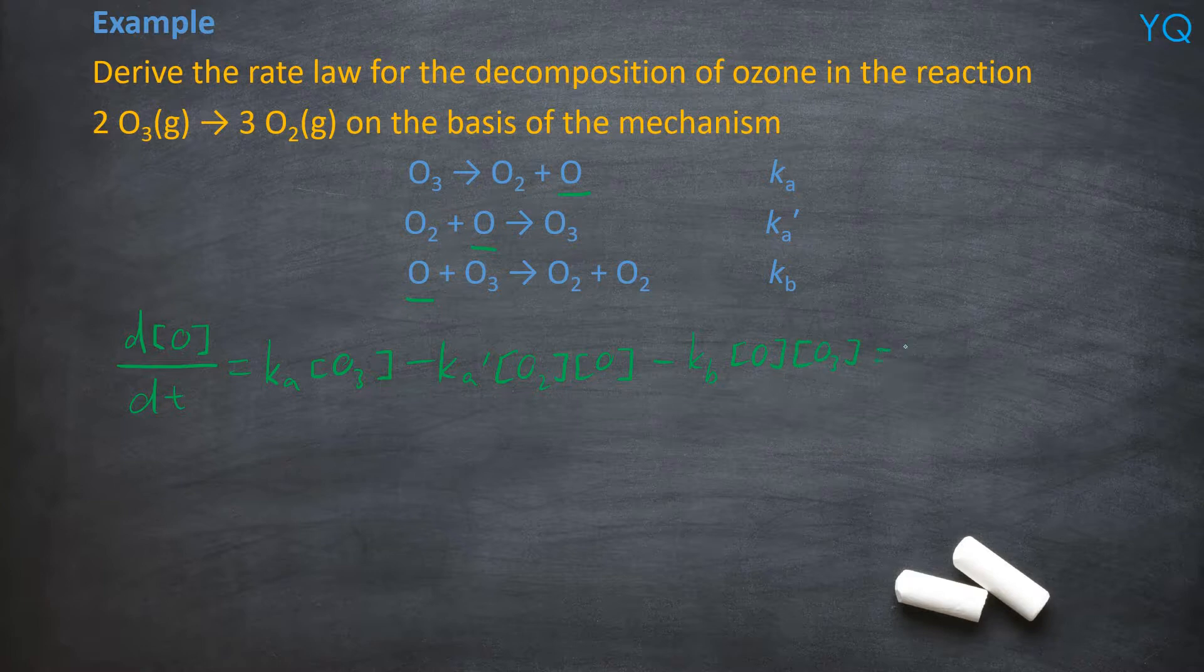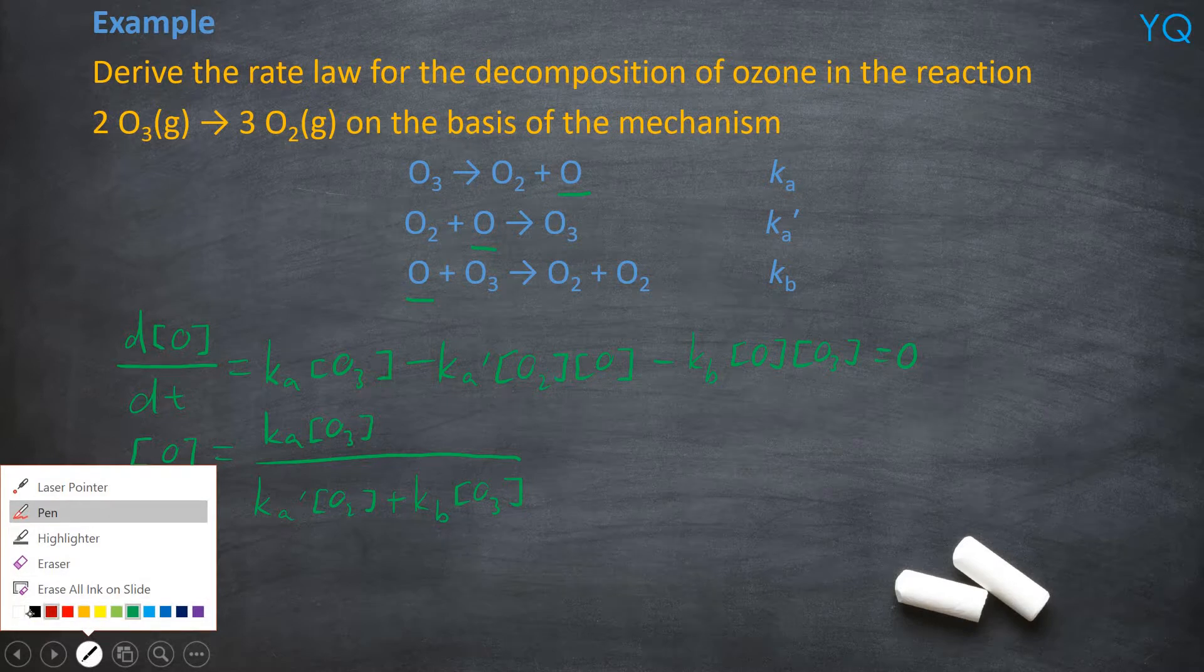Okay, and the whole equation is equal to zero. Alright, so the next part, you need to make your intermediate the subject of the equation. So oxygen atom will be equal to Ka times O2. You can slow down the video if it's too fast for you.